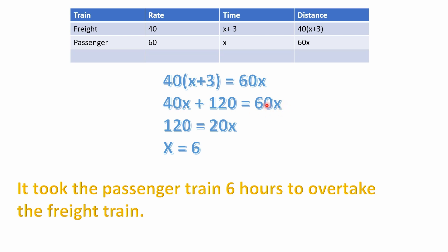To get x on one side, subtract 40x from both sides: the 40x on the left goes away, and 60x minus 40x leaves 20x. Now we have 120 = 20x. Dividing both sides by 20 gives x = 6. So it took the passenger train six hours to overtake the freight train.